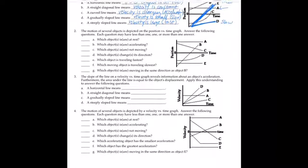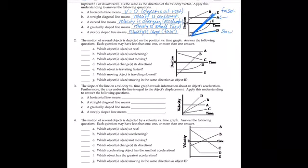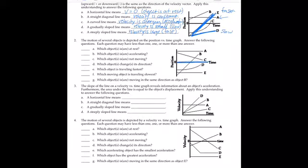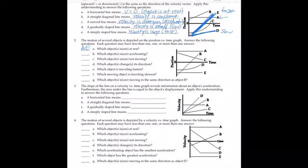The motion of several objects is shown on a position-time graph. Note: the horizontal time axis is not an object's line — don't use it. Which objects are at rest? That's A and E — both are straight horizontal lines, meaning position is not changing the entire time. Which object is accelerating? That's D only, because it's the only curved line on the graph.